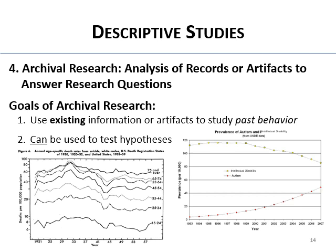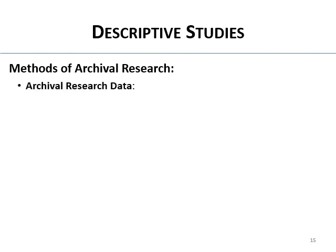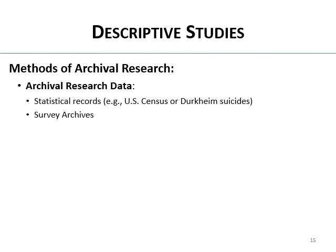The methods of archival research include finding statistical records such as U.S. Census data, the BRFSS, or Durkheim's famous study of suicides in France. You can also look at survey archives — surveys done annually for 20 or 30 years on the same group — to track changes over time in things like teen drug use or suicidal ideation. That data exists and is often free.